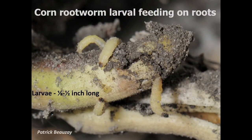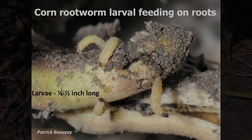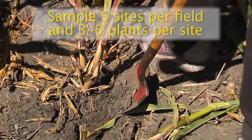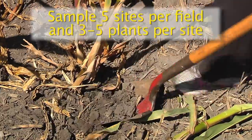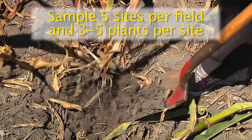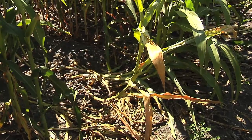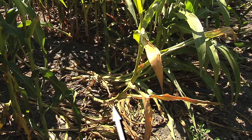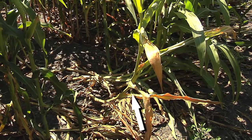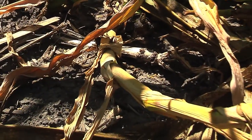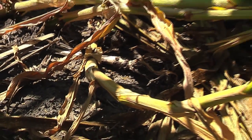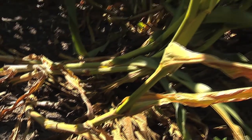To determine if there's larval activity feeding on the roots of the corn plant by corn rootworm, we need to dig up the corn plants and examine the roots. Another symptom of corn rootworm, which is evident in this plant, is the goose-necking and the lodging of this corn plant.